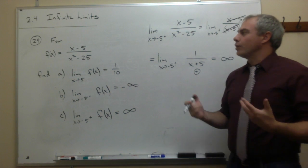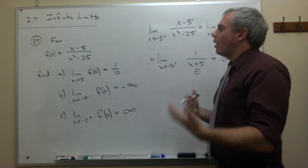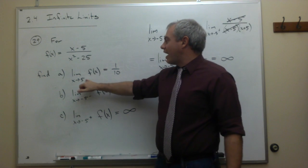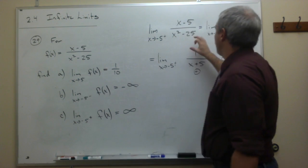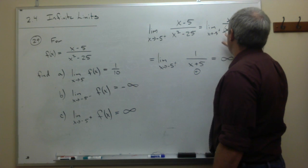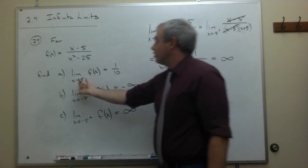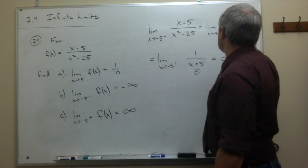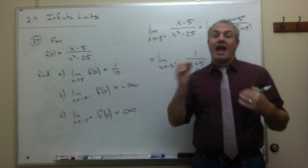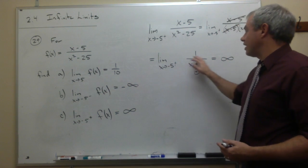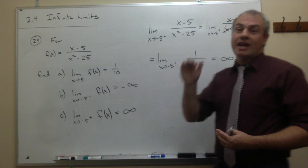To summarize what's going on: at x equals 5, the x minus 5 factor cancelled, so the function has a hole in the graph at that point. At x equals negative 5, there's nothing to cancel out the x plus 5, so the function has a vertical asymptote there.